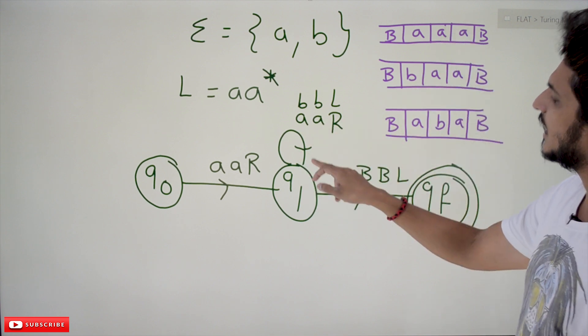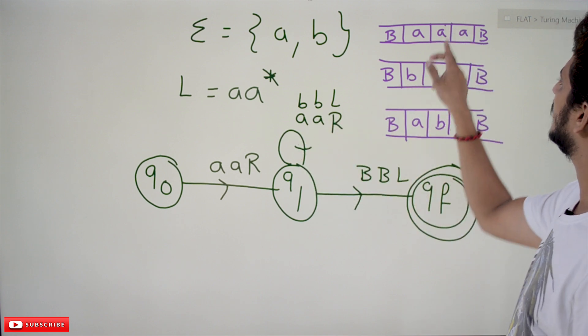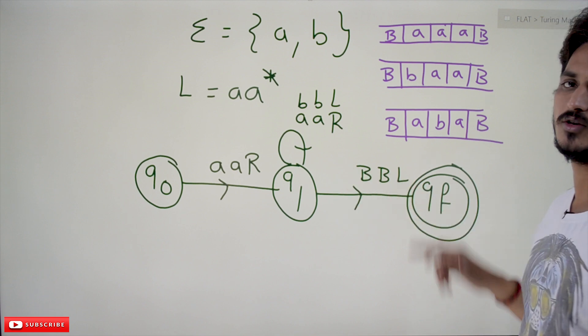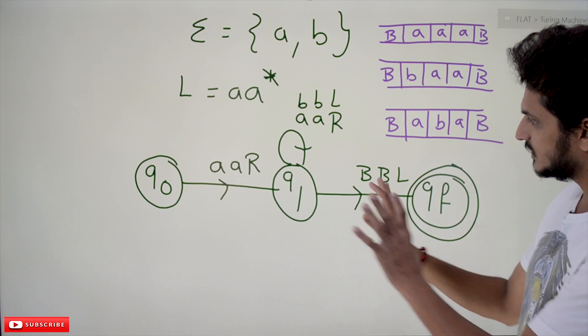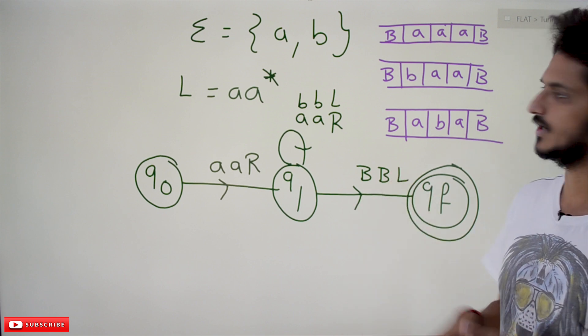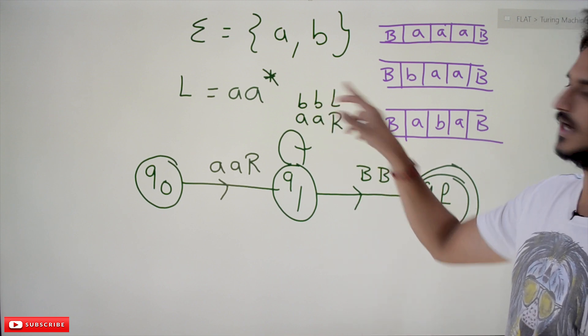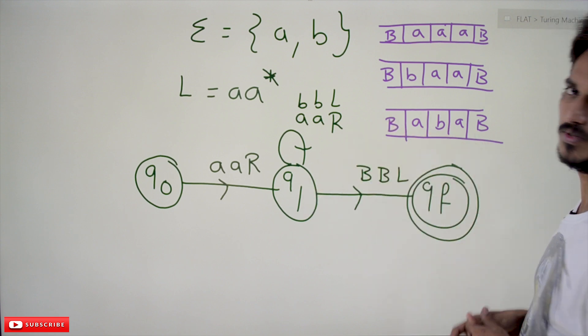If you found A, blank, we are going to final state. See, this is how we have written the Turing Machine. If you found B, keep it as B and left. So this is what the Turing Machine is. Let's try to understand what this Turing Machine does on our three inputs.